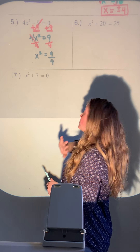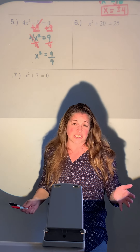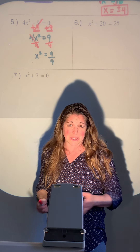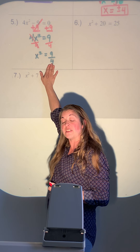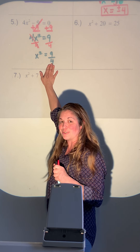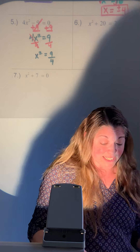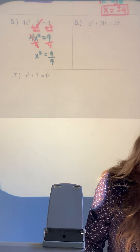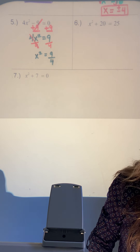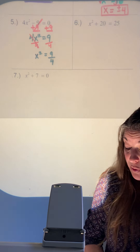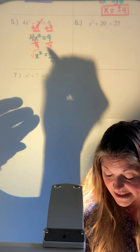You might notice that 9 is not perfectly divisible by 4. You could use a calculator, but just leave the fraction as is — I'll show you what to do next. We've got x squared all by himself.